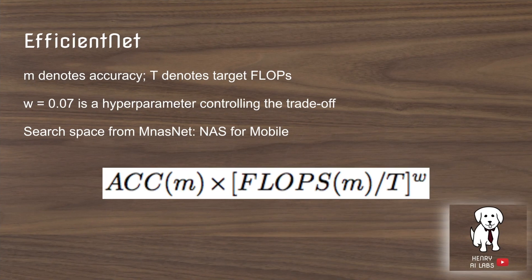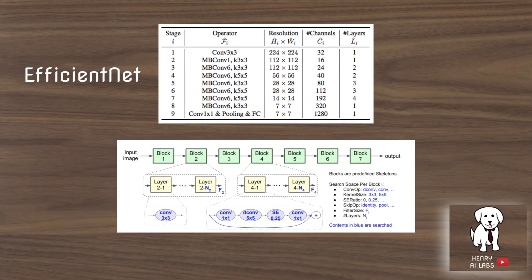The network they use to test their technique is EfficientNet, based on the neural architecture search for mobile nets idea, where they optimize the network for accuracy but also penalize it if it's too computationally heavy. In the mobile neural architecture search net paper, they also penalize it for slow inference time. There will be a link in the description for another video covering exactly how their neural architecture search technique works.